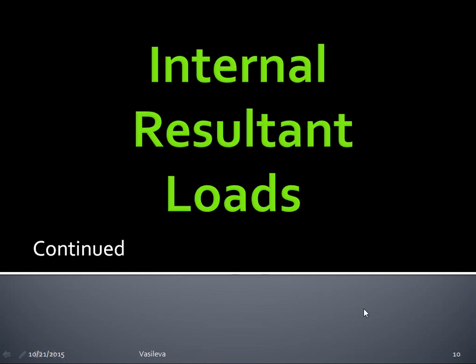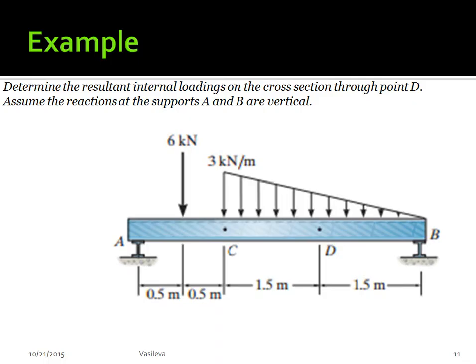Let's look at another example of internal resultant loads. This question is the exact same problem as the previous one, but it's asking us to find the loadings through point D. The previous one was through point C, so now let's look at point D.